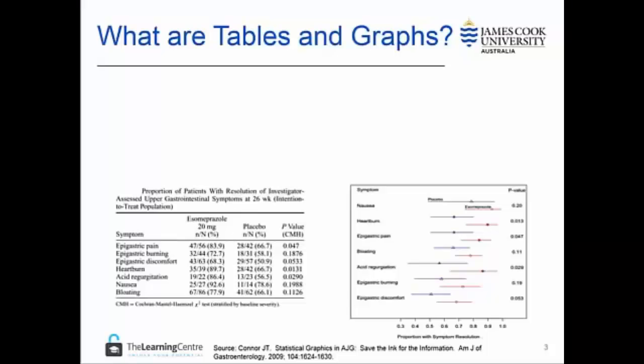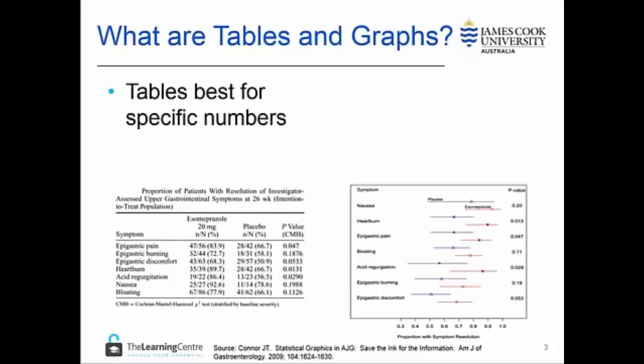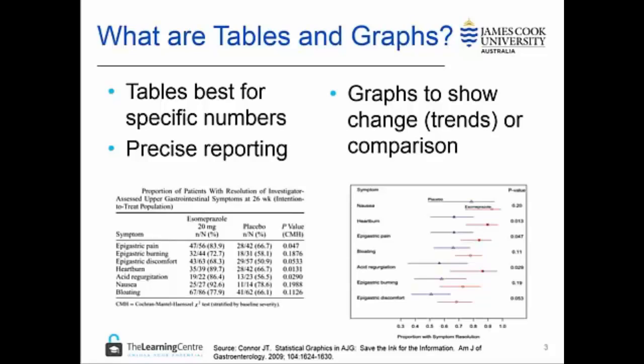Tables and graphs are both ways of easily representing large amounts of data. Tables are best used for reporting specific numbers, which is necessary when precise reporting is needed. Graphs are best to show changes in datasets over time, which is known as trends, and comparison across categories.